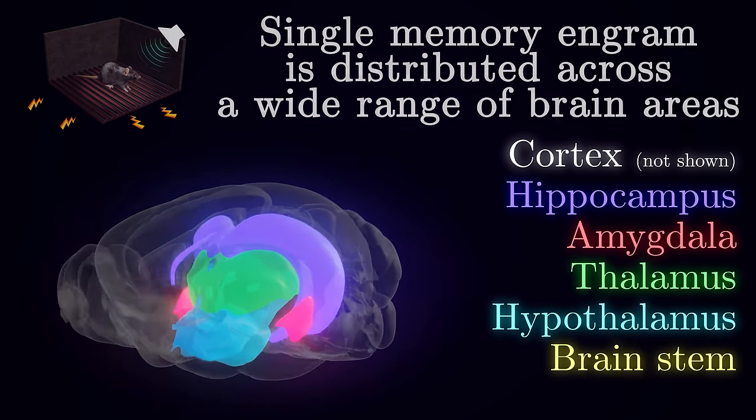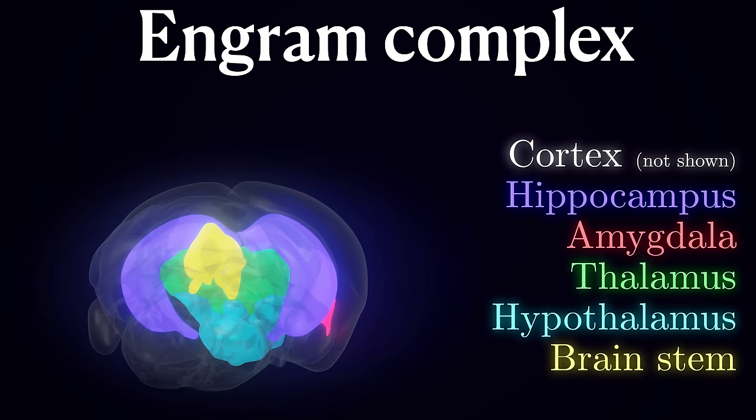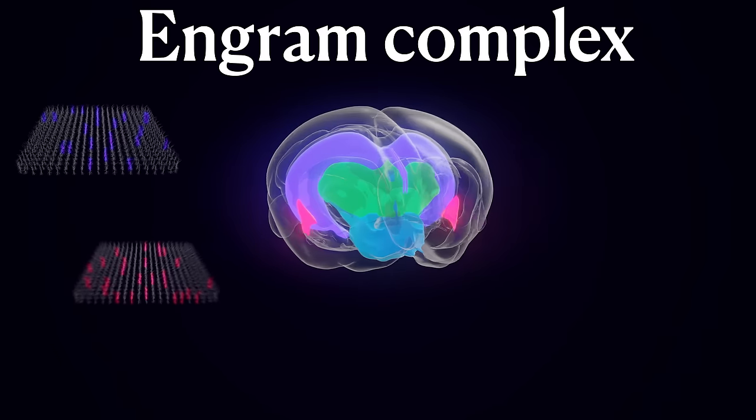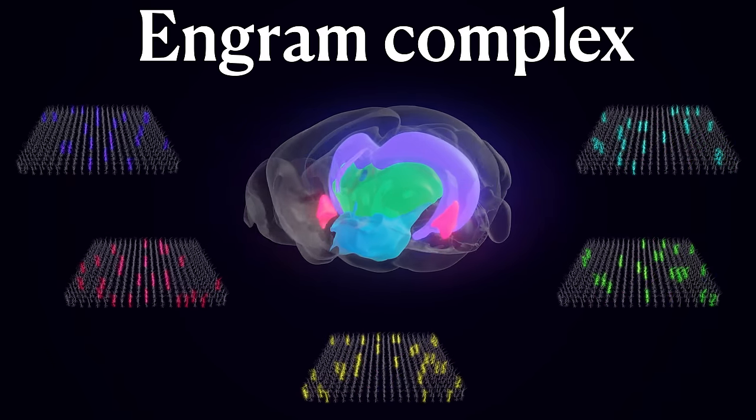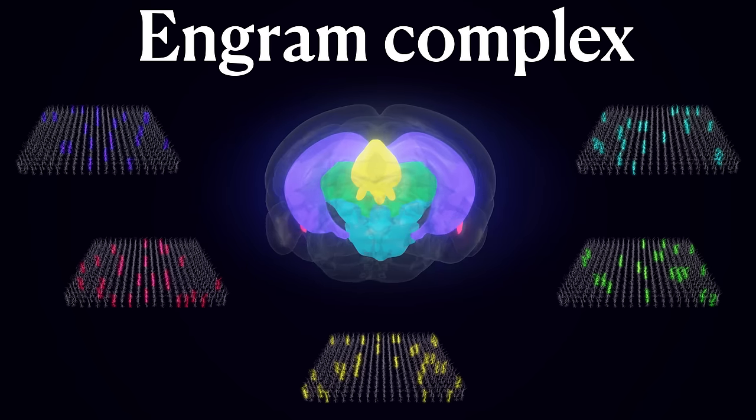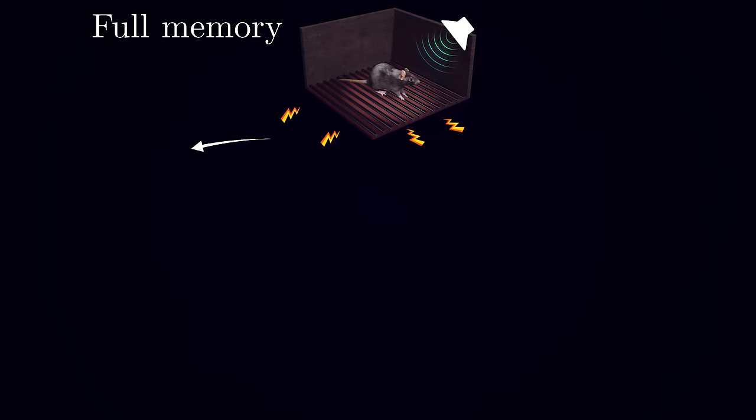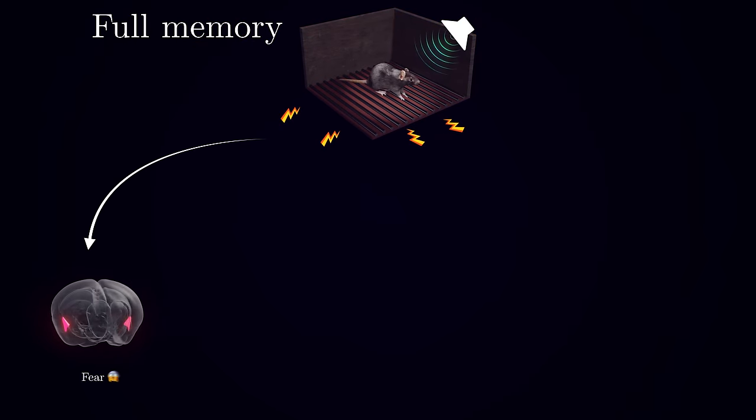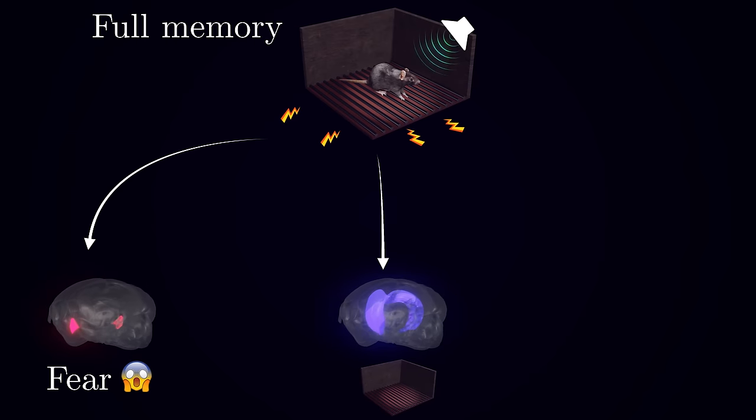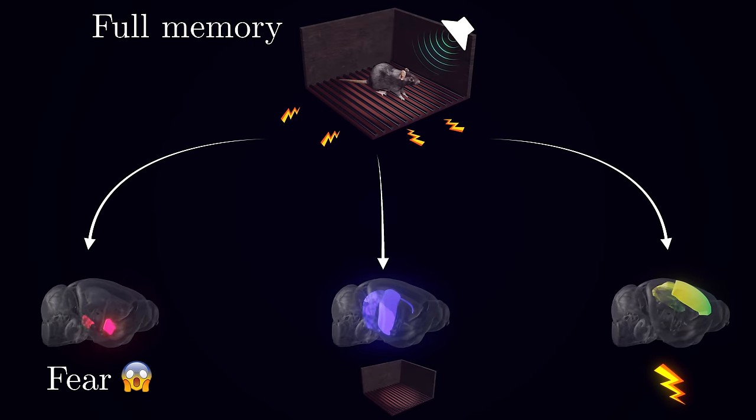This supports the idea of a so-called engram complex, that memories are not localized in one specific region. Instead, they are distributed across sparse ensembles of neurons scattered throughout the brain. This has led to the idea that different brain regions are likely to encode specific aspects of the full memory. For example, part of the engram in amygdala holds information about emotional valence. Hippocampus is responsible for the spatial context, and the cortex might encode the particular sensory experience of the foot shock.